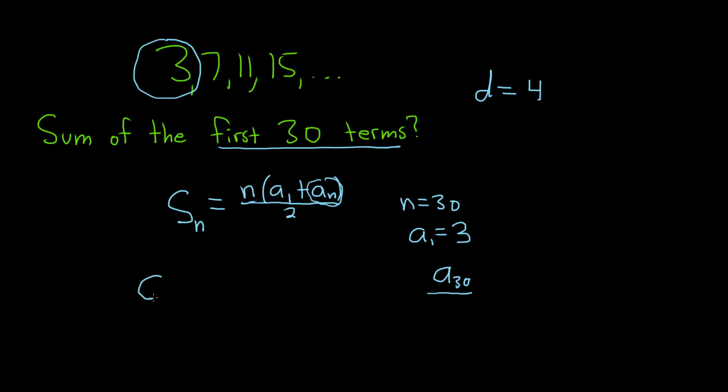So to figure out a sub 30, we're going to create an equation for a sub 30 involving what we already know. We know the first term. So a sub 30 is equal to the first term. And now we have to ask the question, how many times do we have to add d to the first term to get to the 30th term?